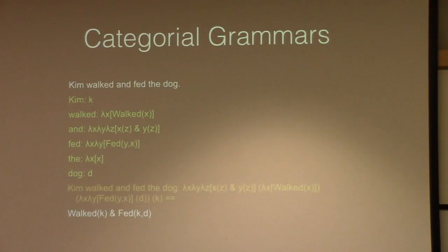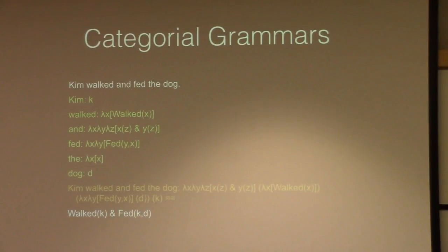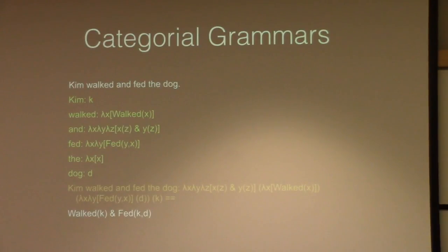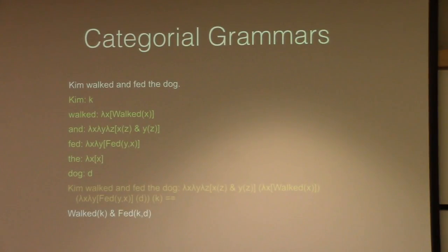Here's a simple example: 'Kim walked and bended.' Each word has a different representation — Kim is a constant, walked is a predicate, and 'and' is interesting: it takes two predicates and a constant and returns a predicate calculus representation. When you fit them all together and compose them, you get the predicate calculus statement: walk(Kim) and bed(Kim). The idea is that all words combine to produce a predicate logic statement, even though every word has a different role.